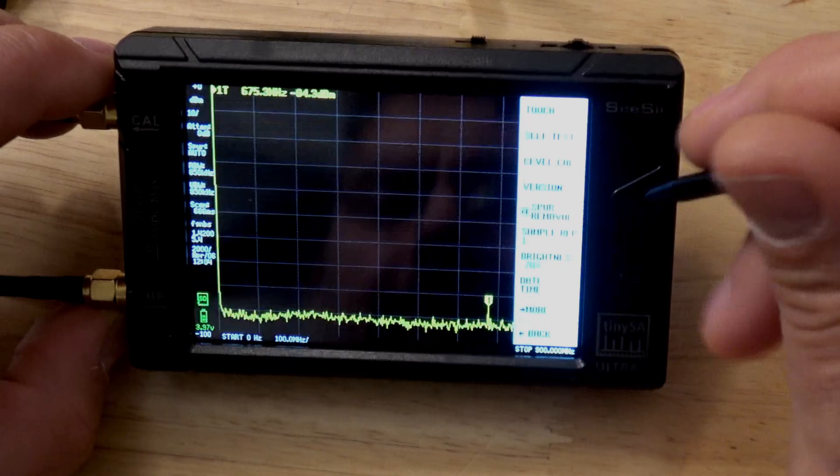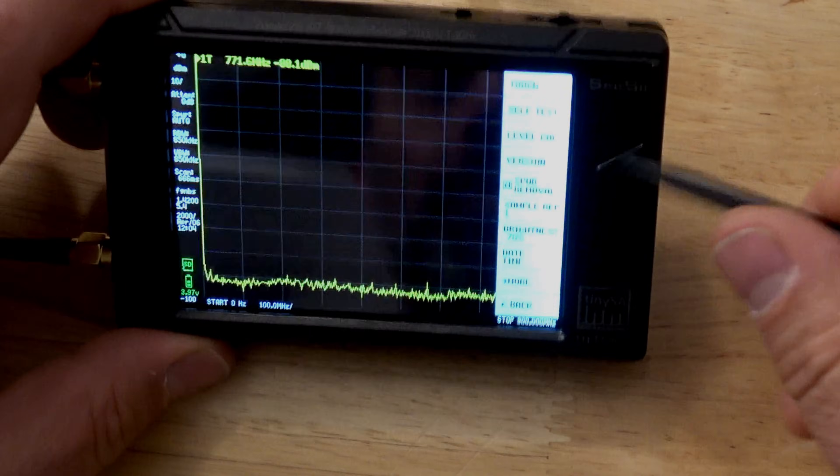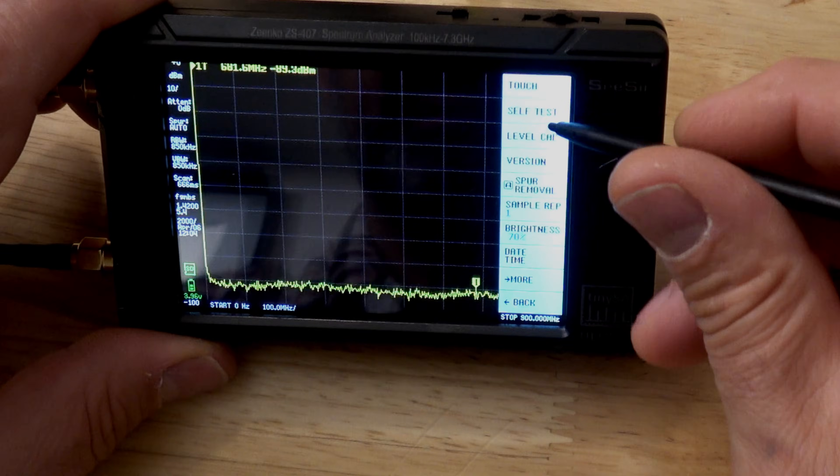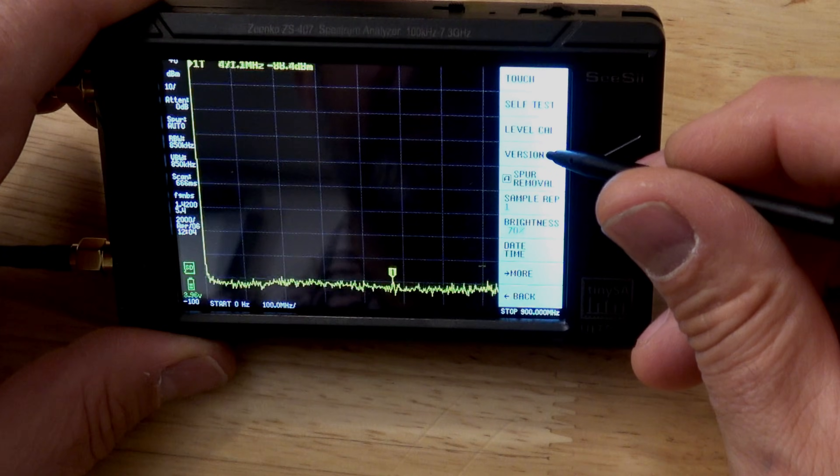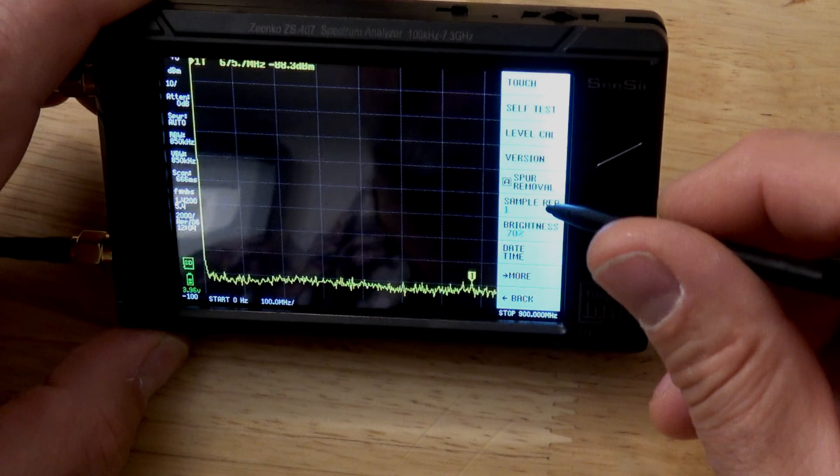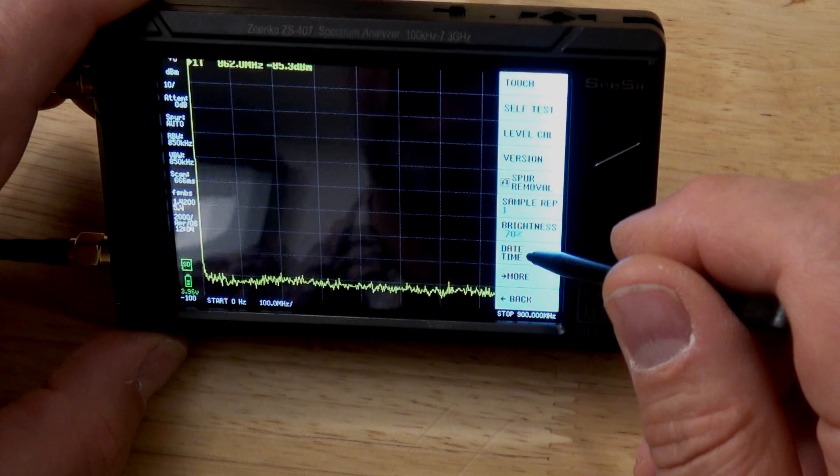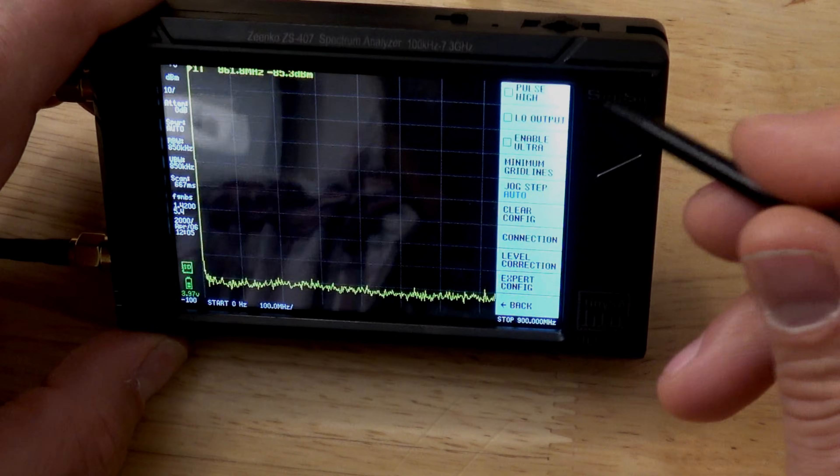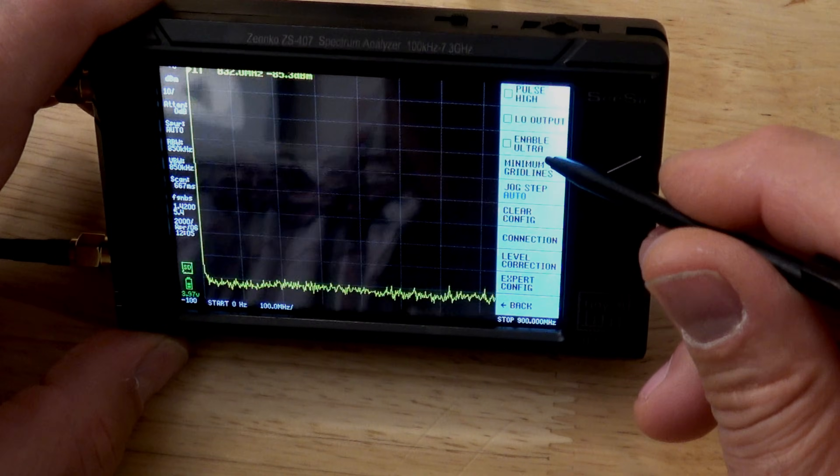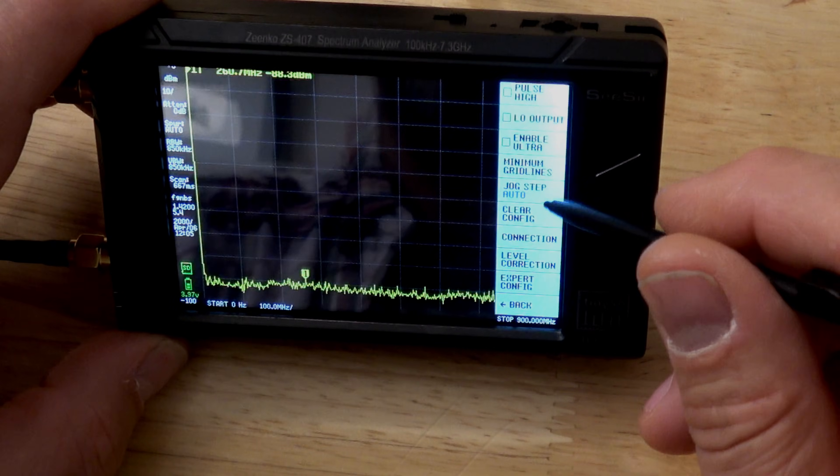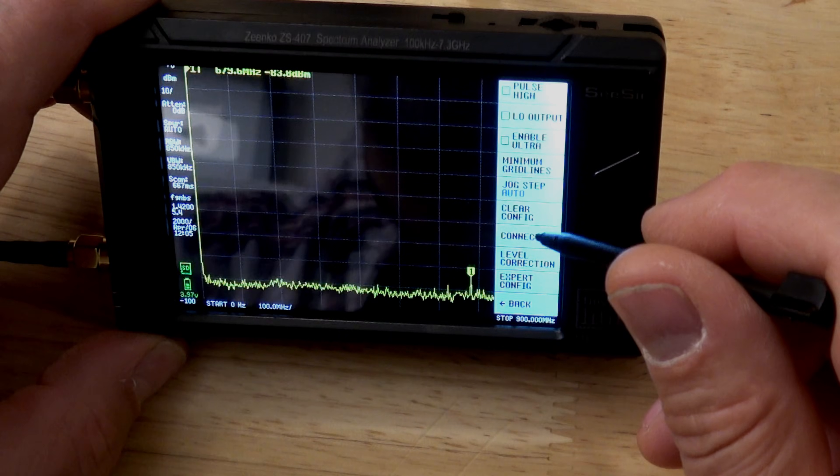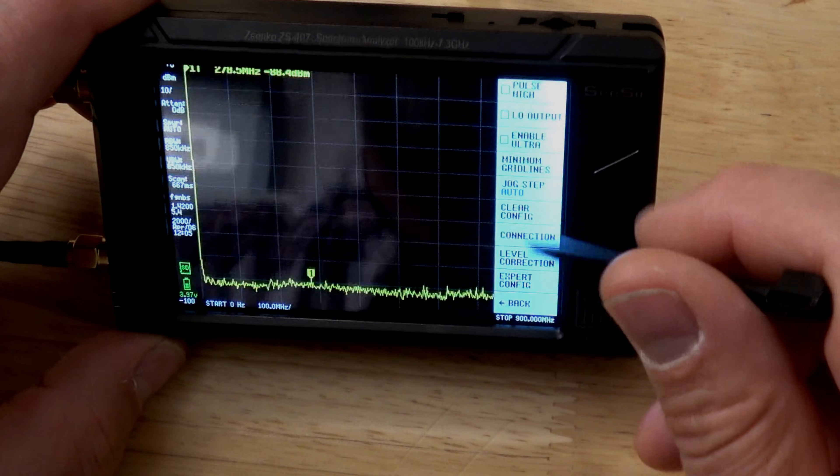All right, now there's some other stuff here that we can get into. Self-test, level calibration, version number, spur removal, sample. So, if you're looking for something to compare it to, you can. You can change your brightness, date and time, pulse high, low output, enable ultra. I'm not sure what that one is. Minimum grid lines, jog step. I don't know, a lot of this stuff. And of course, we can reset it here if we don't want to.